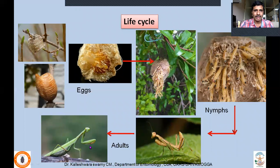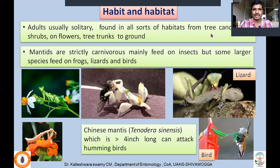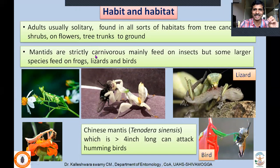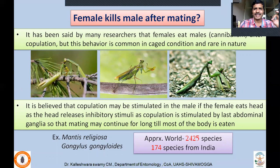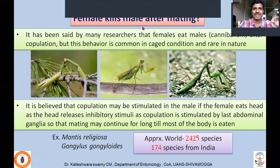Adults are usually solitary, found in all sorts of habitats, from tree canopy to shrubs, on flowers, tree trunks, and the ground — wherever prey animals are common. Mantids are strictly carnivorous; you will not find phytophagous mantids. They mainly feed on insects, but larger species can feed on frogs, lizards, and birds. They wait for prey on flowers or leaves, camouflaged. One very important character of praying mantids is that the female kills males after mating.